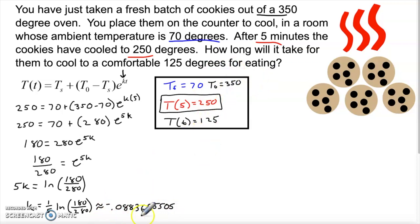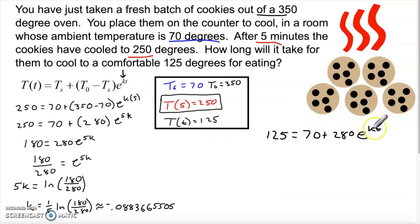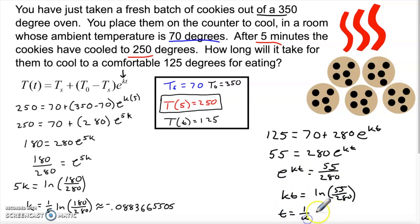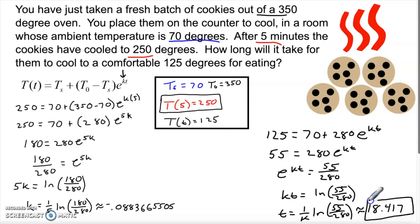I want the temperature to be 125, so I set up: 125 = 70 + 280e^(kt). Subtracting 70: 55 = 280e^(kt), so e^(kt) = 55/280. Taking the natural log: kt = ln(55/280), therefore t = (1/k) × ln(55/280) ≈ 18.4 minutes. So we're going to have to wait just about 18 and a half minutes to eat these cookies.